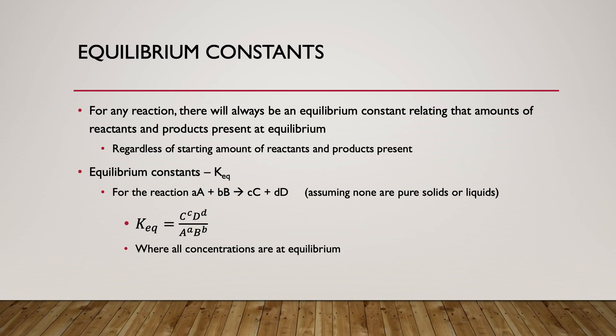For this lab, we'll be focusing mainly on KC, using concentrations. The equilibrium constant is calculated as all products divided by all reactants, with each raised to the power of its stoichiometric coefficient from the balanced reaction. This ratio is always constant for a particular reaction, regardless of whether you started with lots of reactants or lots of products.